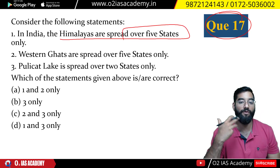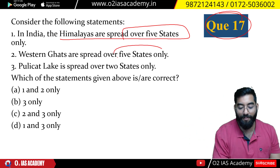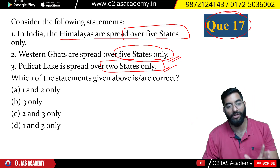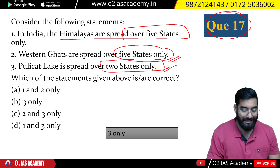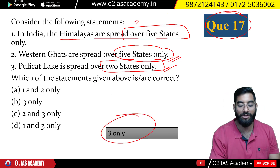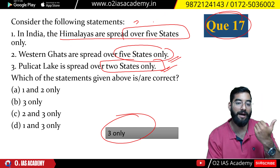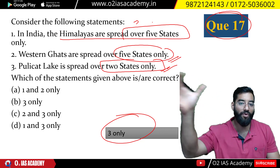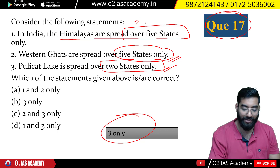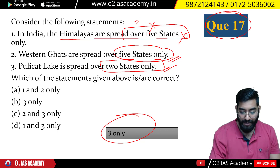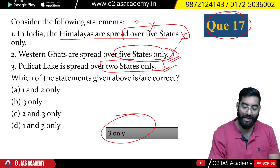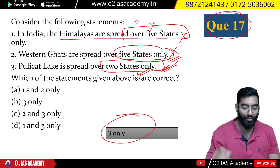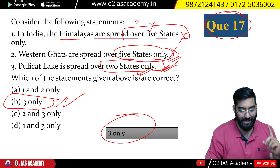Question 17: The Himalayas are spread over more than five states — the statement that they are spread over exactly five states is incorrect, as they cover more. The northeastern states also have Himalayan mountain ranges called Purwanchal, including Dafla, Abor, and Mishmi Hills. Pulicat Lake forms a boundary between Andhra Pradesh and Tamil Nadu, so it is in two states. The correct answer is option B — statement 3 only is correct.